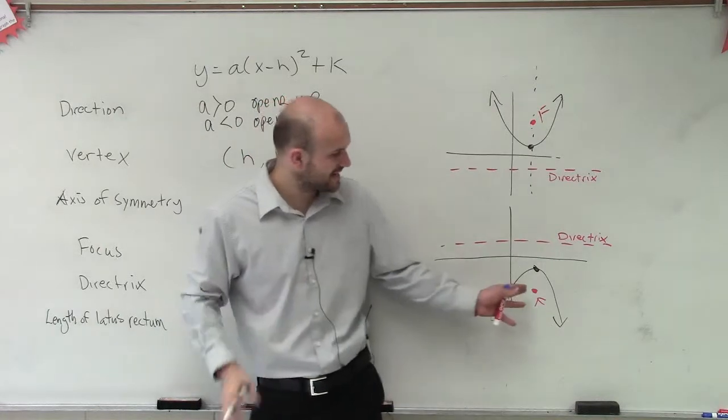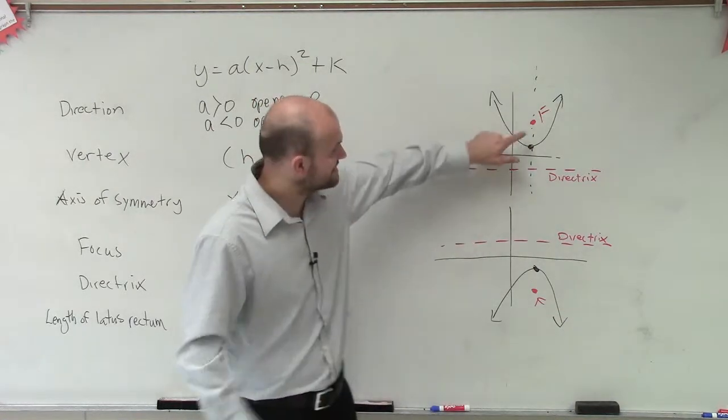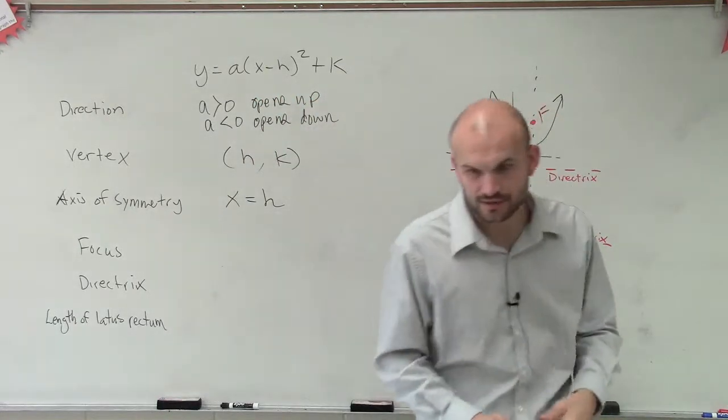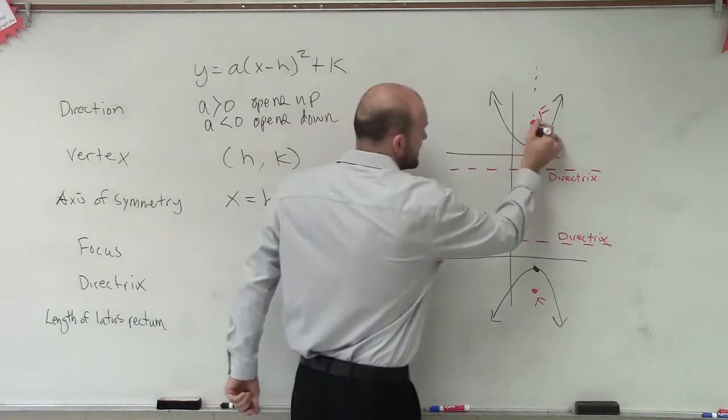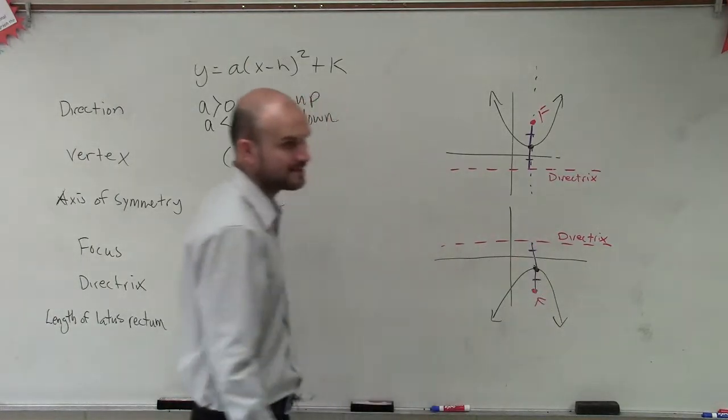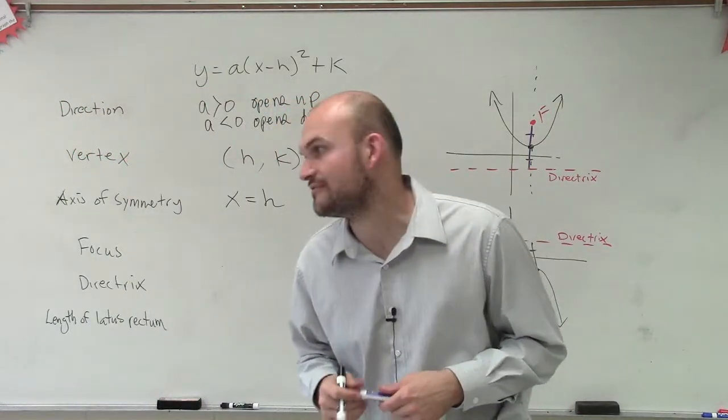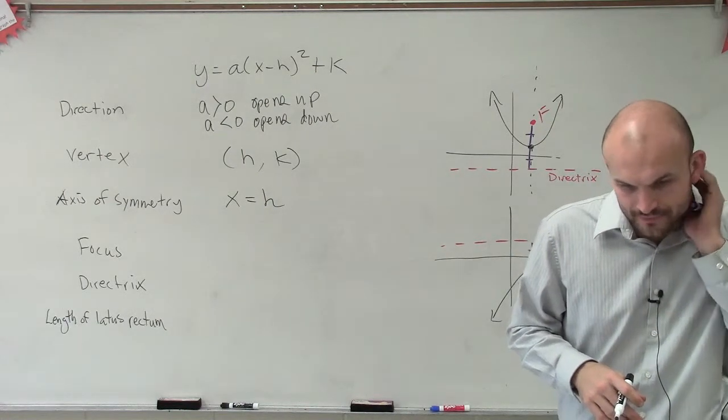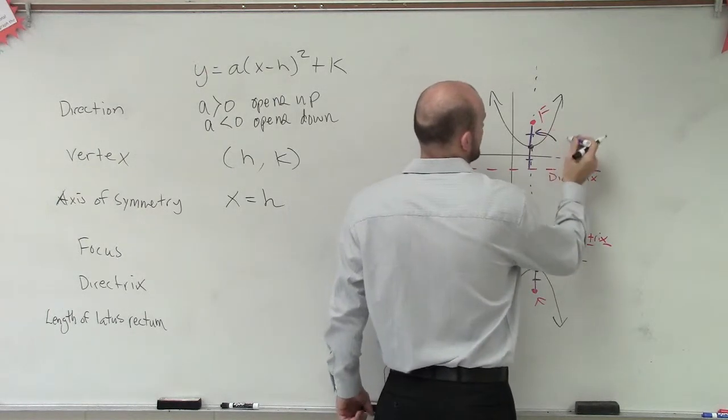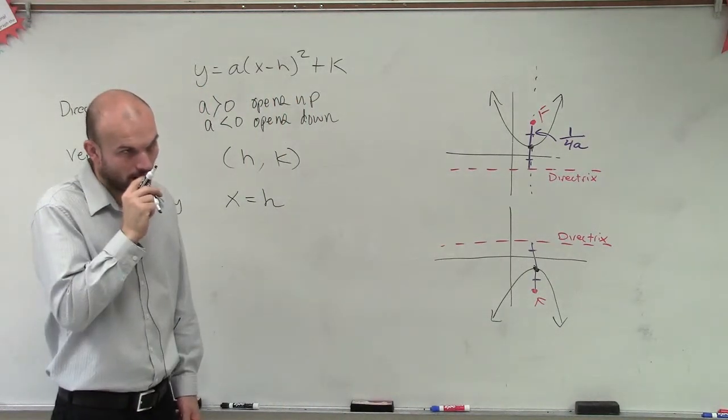So, the two things I want you guys to understand is, notice where my focus is inside the parabola. Now, we know that this distance has to be equal to that distance. This has to be equal to that. This is equal to that. So, now what we're going to do is, we're kind of going to learn what exactly is that distance. How do we figure out that distance? So, that distance is 1 divided by 4a.